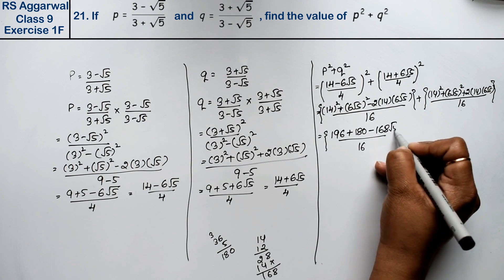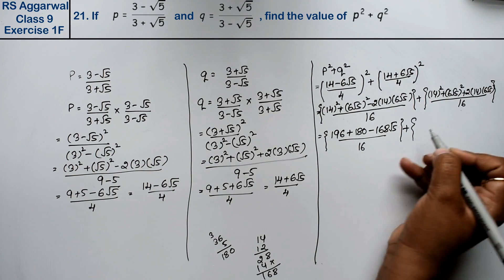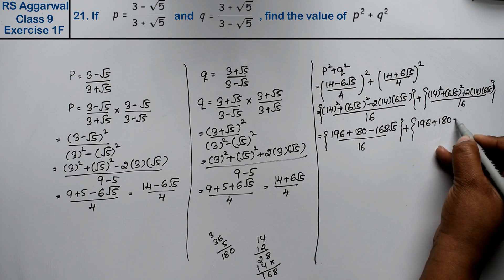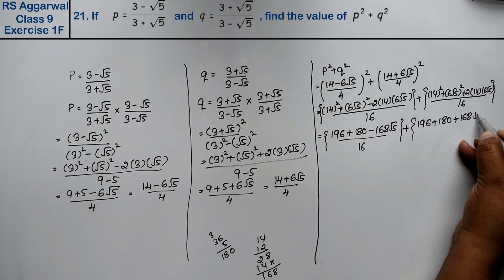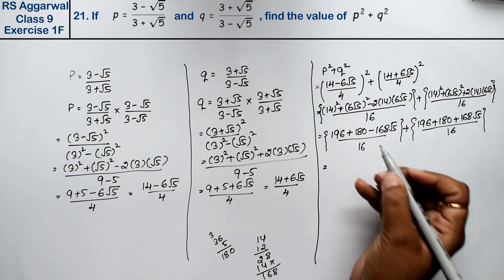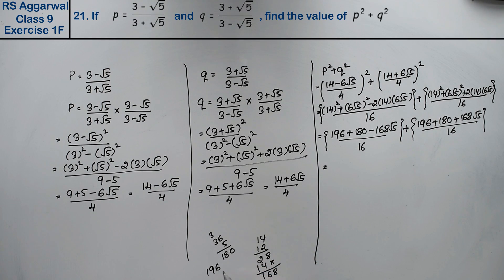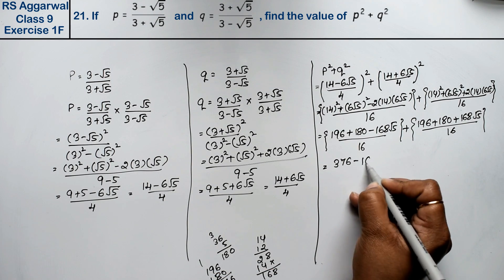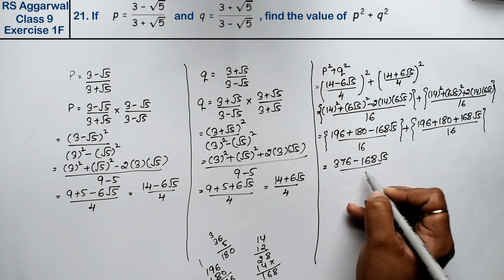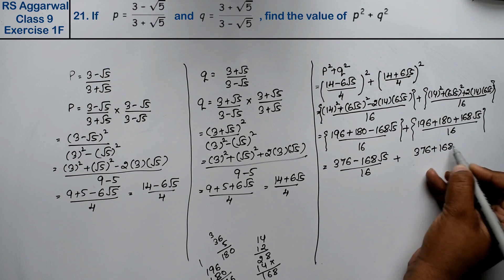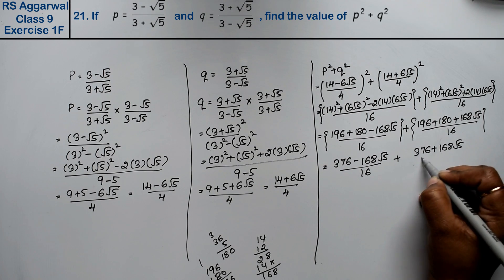Plus, here is 196 plus 180 plus 168 root 5 upon 16. Now we add both these: 196 and 180, that's 376. So we get 376 minus 168 root 5 upon 16 plus 376 plus 168 root 5 upon 16.